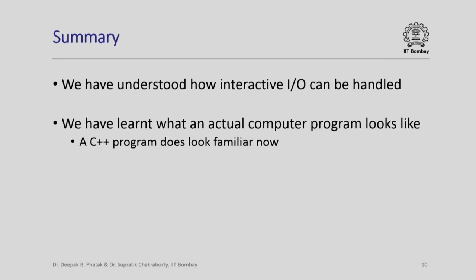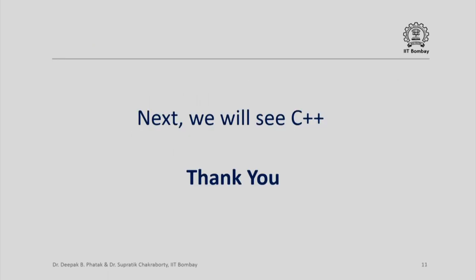In summary, we have understood how Dumbo can handle interactive input output. We have also learned what an actual computer program looks like. In fact, we noticed that a C++ program does look familiar now. With this preparation, we are now ready to jump into C++. Next, we shall see C++. Thank you.